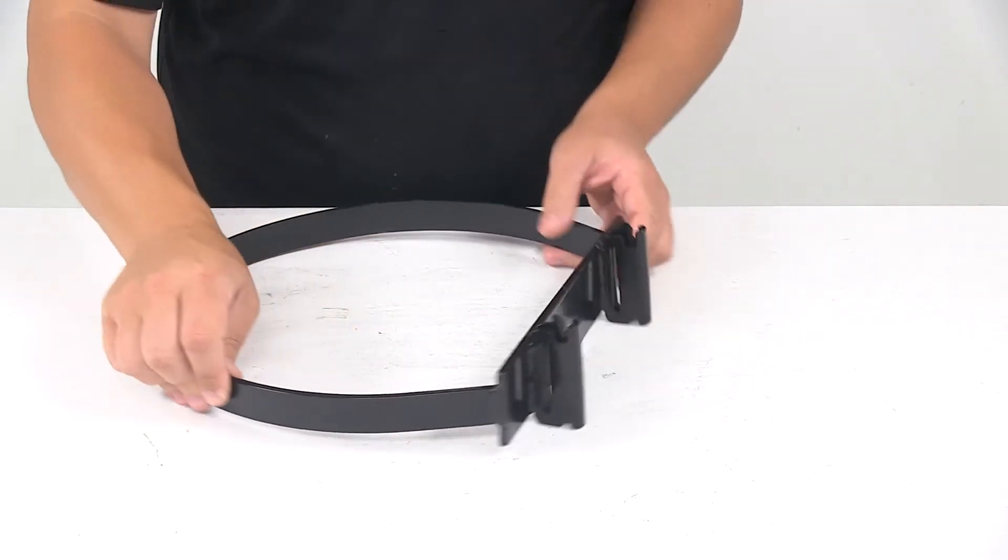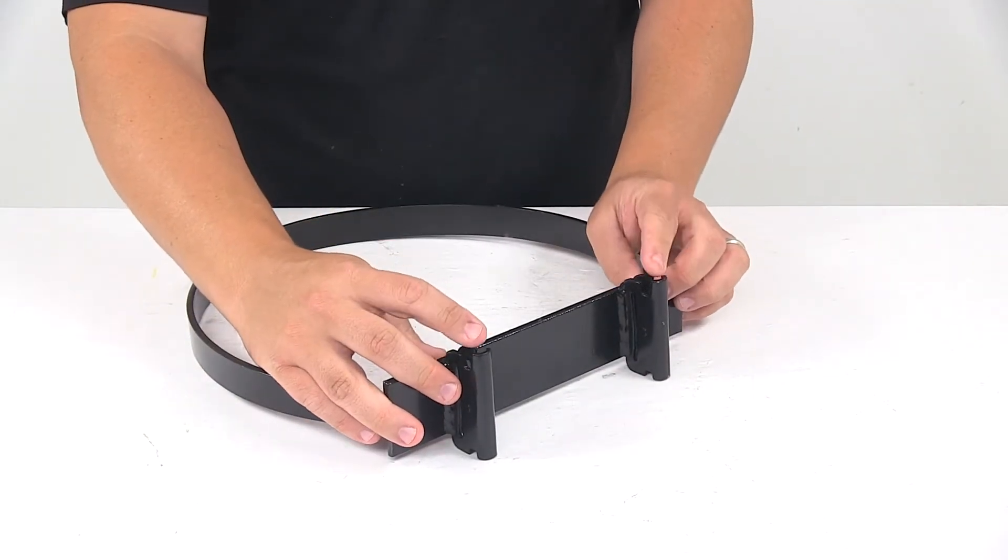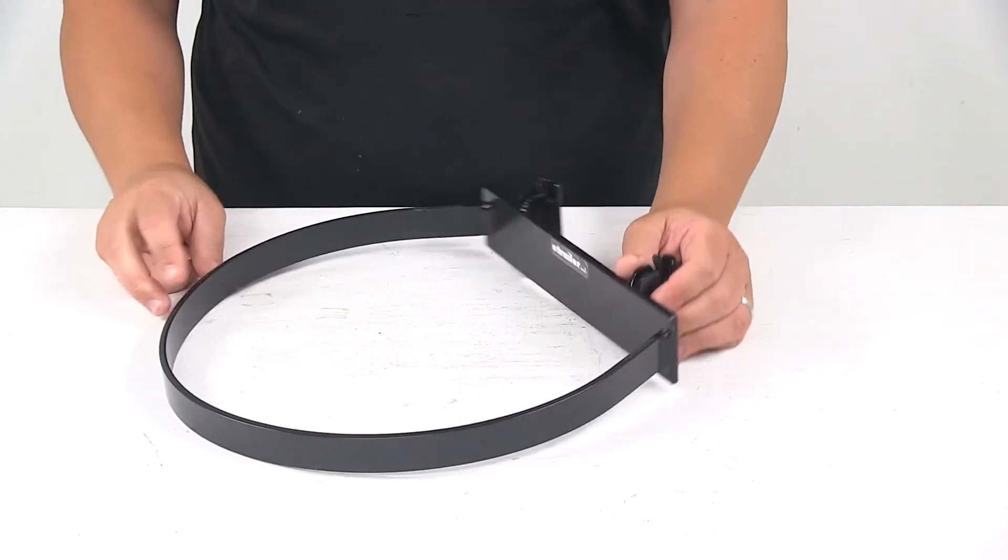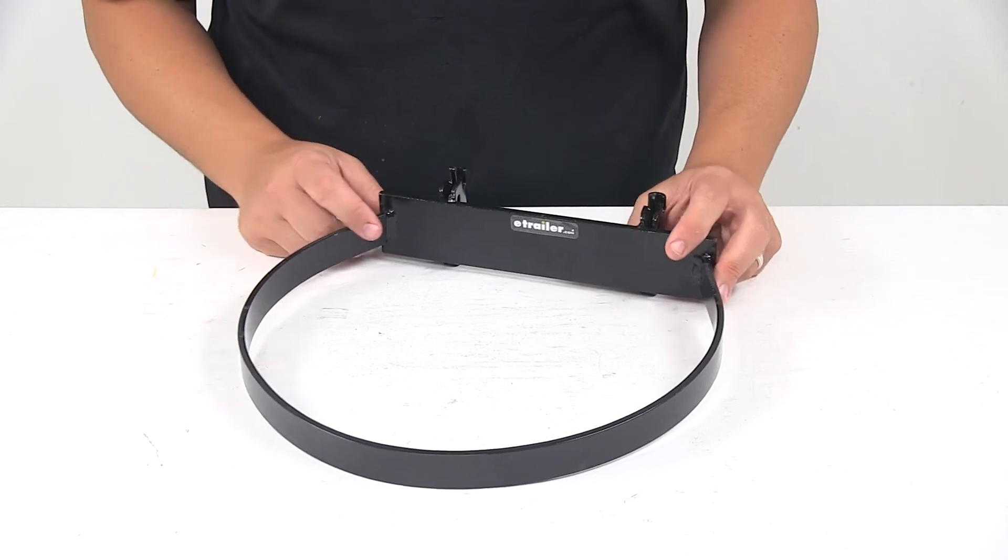It features spring-loaded fittings that are designed to snap into the anchor slots on your eTrack system. eTrack is not included. If you need some, you can find all that at eTrailer.com.